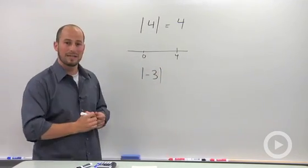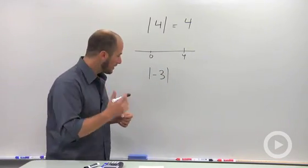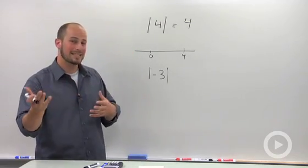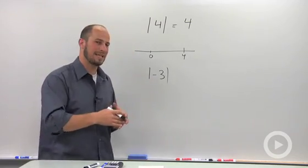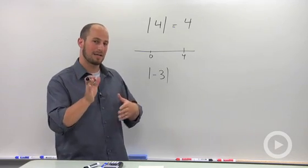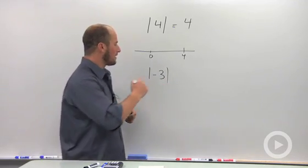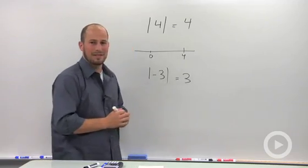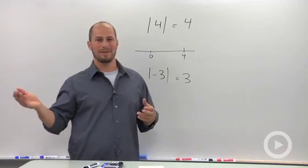Absolute value of negative three. Again, it does make it positive, so this actually is three. But the reason being is it's the distance from this number to zero. Distance is always positive. You don't say I'm going negative five blocks.